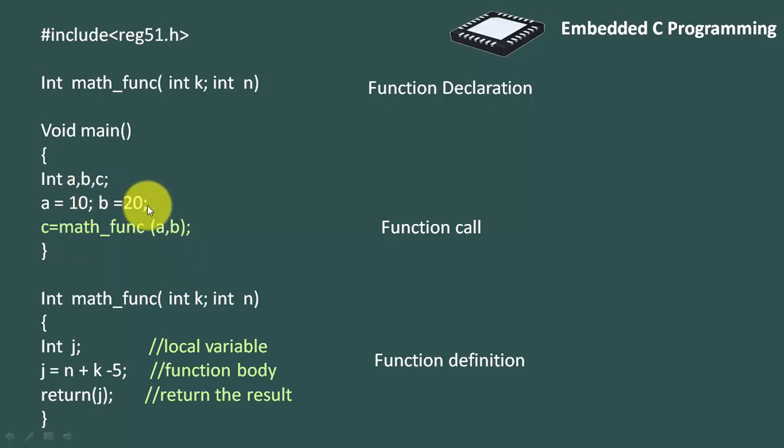When the compiler executes this statement, it will directly go to the function definition. It will pass value of a equals 10 to k, and value of b, that is 20, to variable n. Int j is a local variable which stores the output after this arithmetic operation.